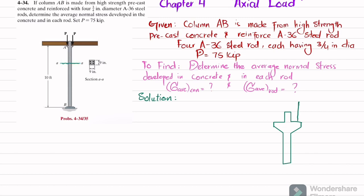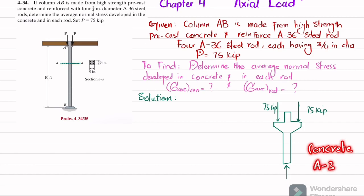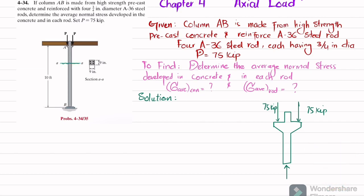The load over here is P, which is 75 kips, and same here we have a 75 kip load. In reaction, you will have a reaction force. You can see that this total load — 75 and 75 — will be taken by column AB, and column AB consists of concrete as well as the A36 steel rods.